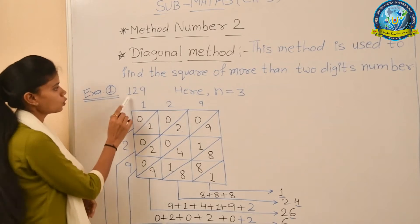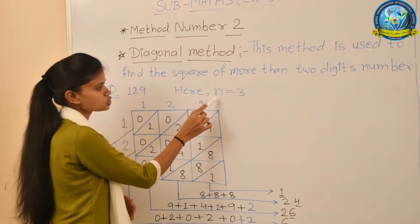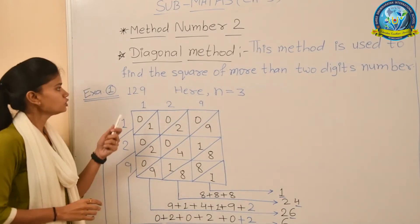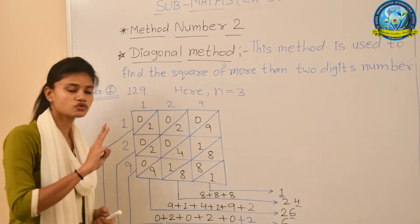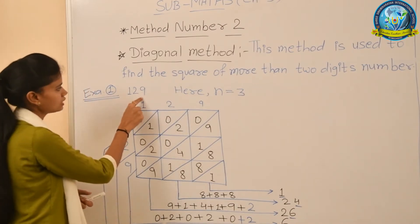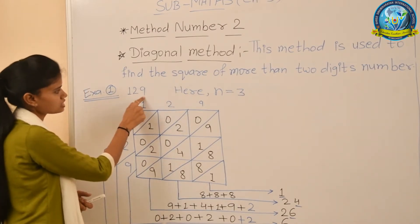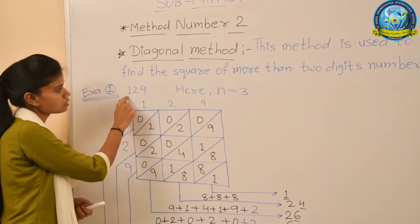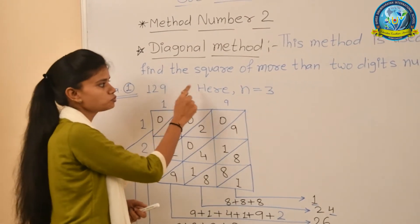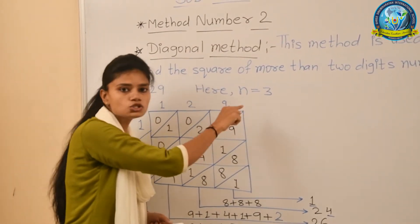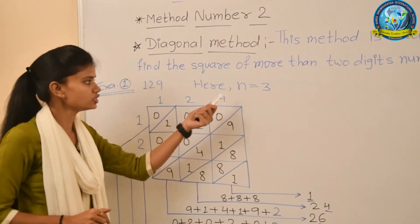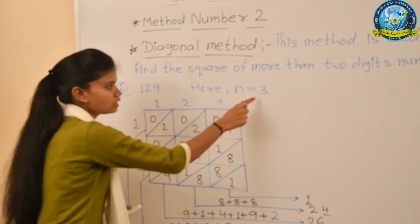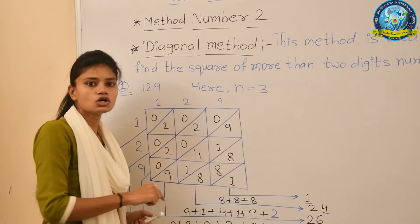The first example is 129. Here, n equals 3, where n means the number of digits. In 129, there are 3 digits total: 9 is in the ones place, 2 is in the tens place, and 1 is in the hundreds place. So total digits in this number are 3.